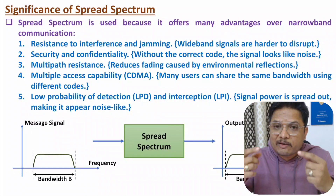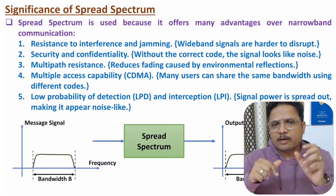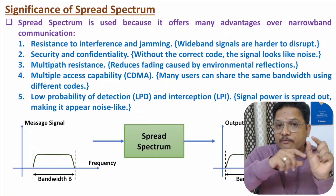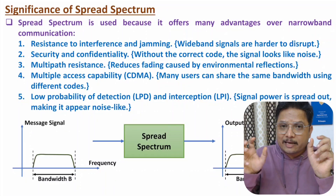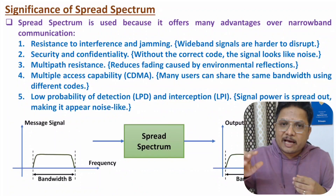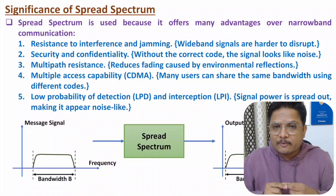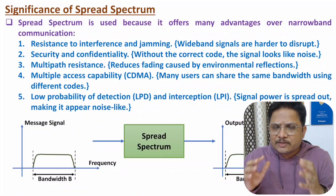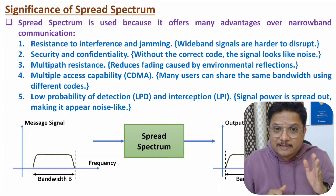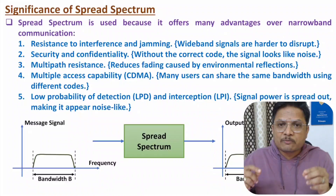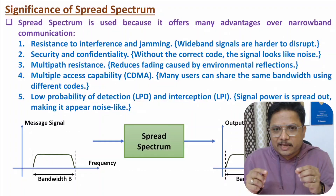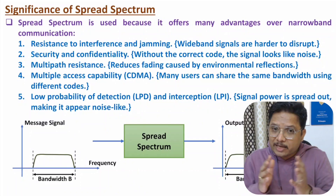Due to spread spectrum, one can have higher security and lower effects of interference. If you have a message signal with bandwidth in kilohertz and transmit it in megahertz, it offers higher resistance to interference, and at higher frequencies you will have long-range communication. Spread spectrum is very essential in communication. In future videos I'll discuss FHSS and Direct Sequence Spread Spectrum for more clarity. If you have any confusion, place it in the comment section — thank you for watching.